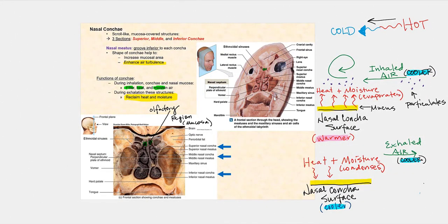Let's look at the nasal conchae and discuss what we refer to as reclamation of heat and moisture. We have three sections of the nasal conchae: the superior nasal concha, the middle nasal concha, and the inferior nasal concha, with their associated nasal meatuses. Inferior to the superior nasal concha is the superior nasal meatus, and the same applies for the middle and inferior conchae.